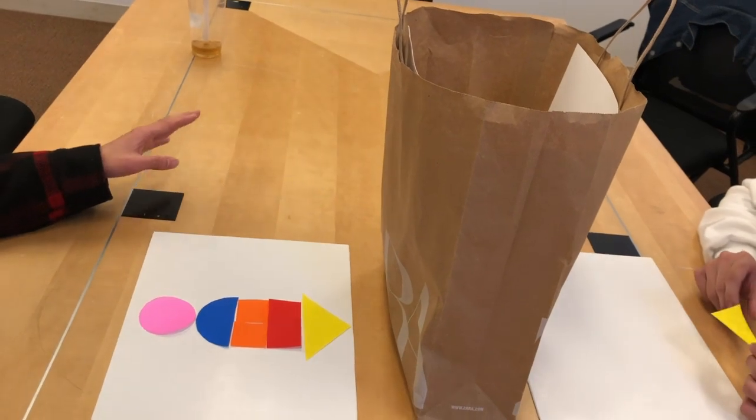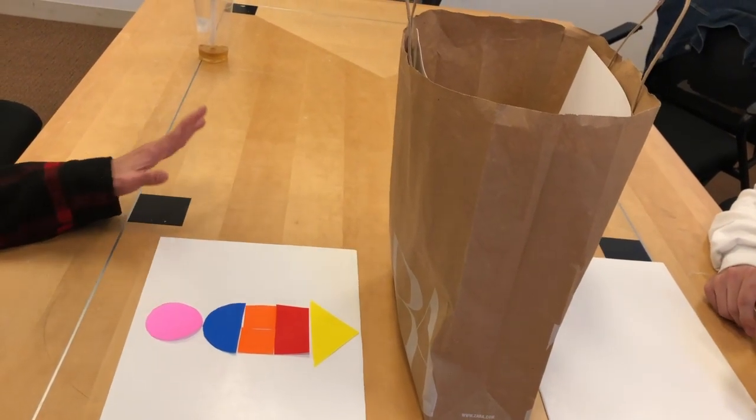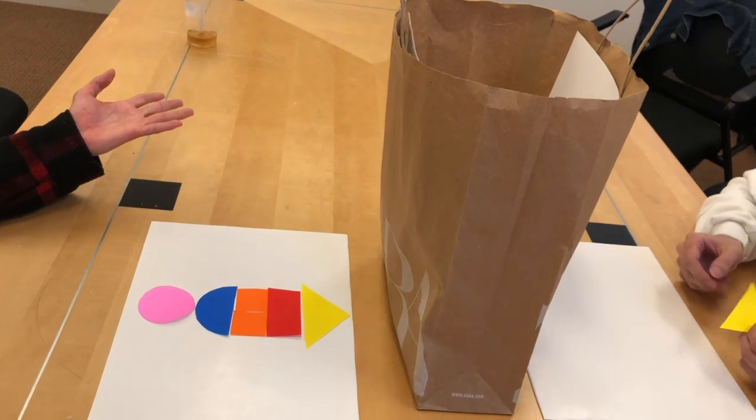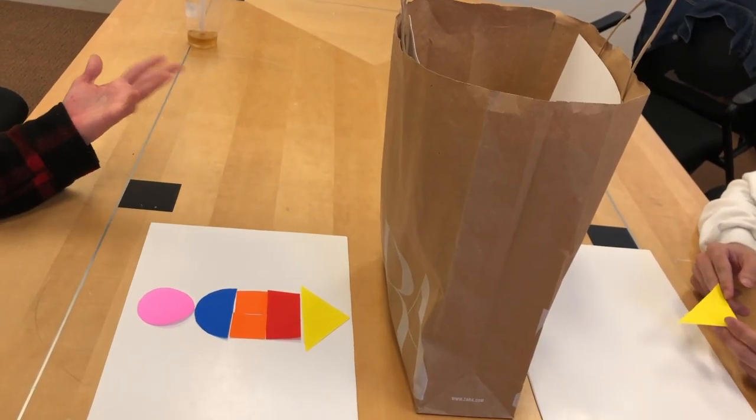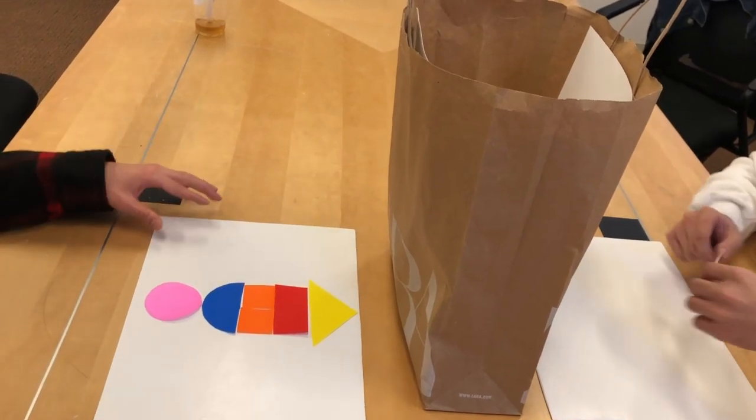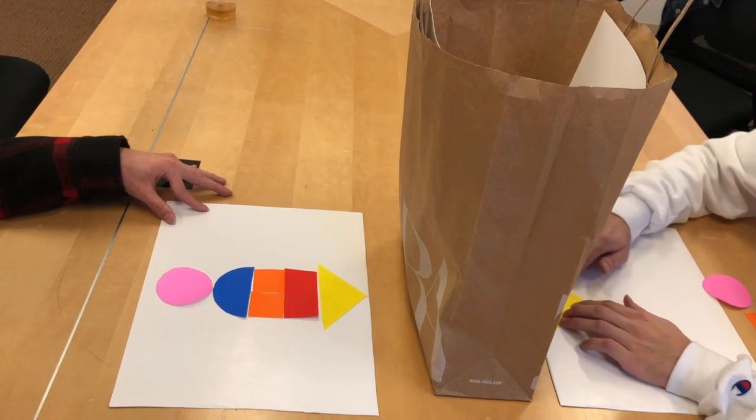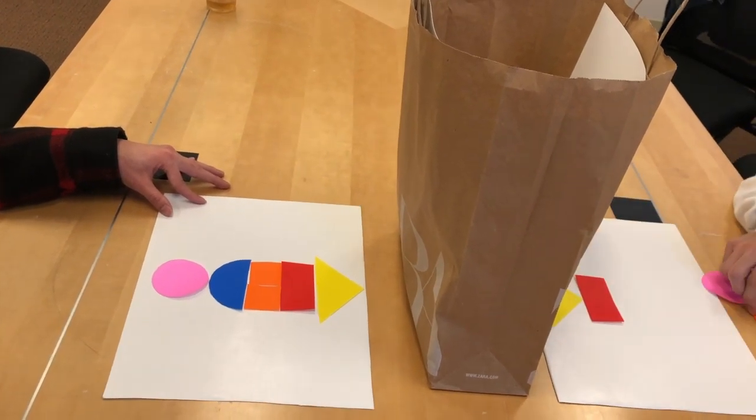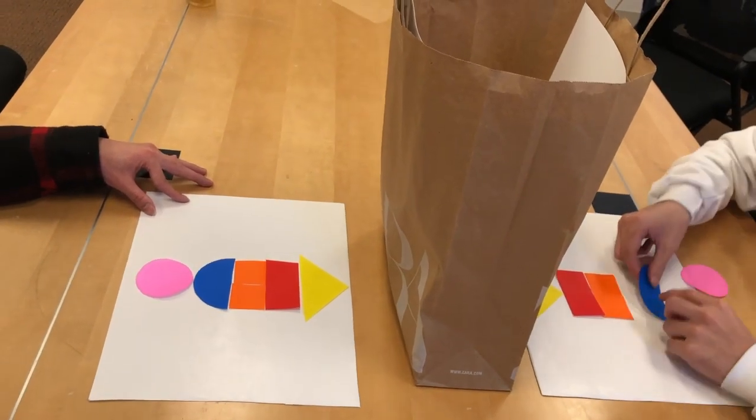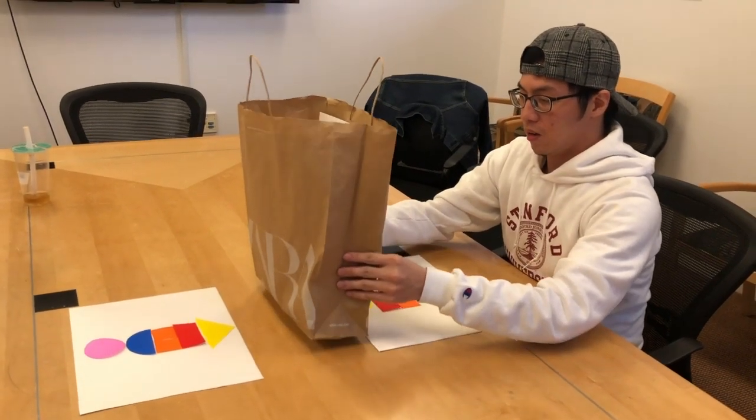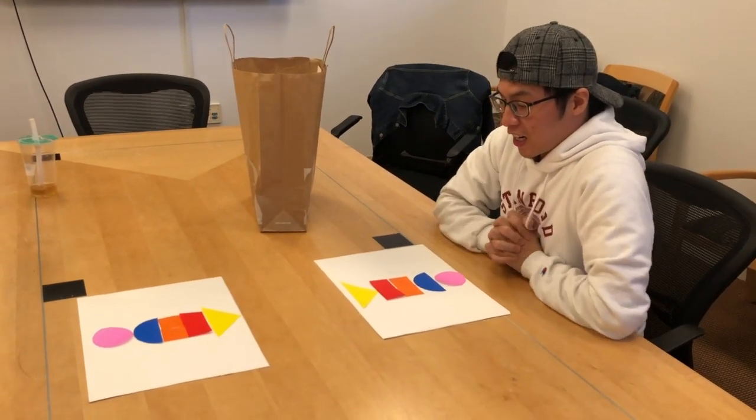So let's begin, it's challenging. Right now we cannot see each other for this kind of situation. When I'm giving instructions, the other side cannot see what I'm doing right now. So basically I have to talk to him to help recover the message from my side. Let's begin. For the first piece, you can put the yellow triangle on the very top. Okay, I did something wrong.